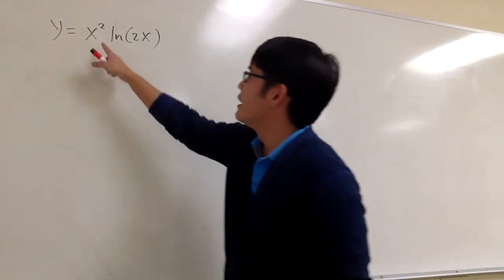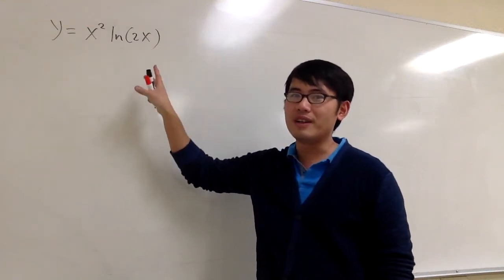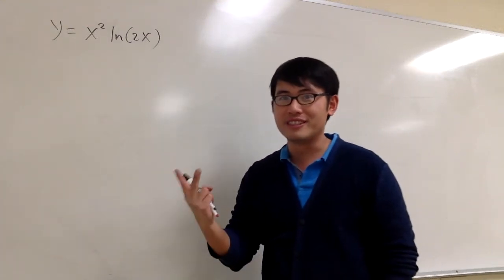We are talking about y equals x squared times ln of 2x. And then to make this more fun, we are not going to just find the first derivative, but also the second.